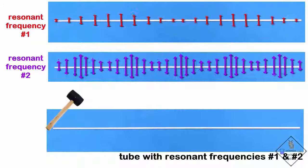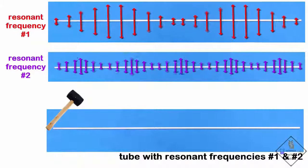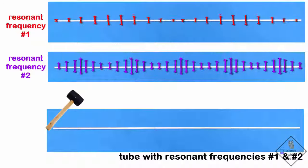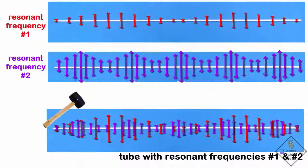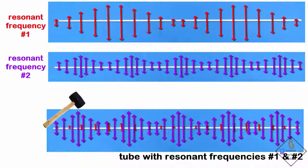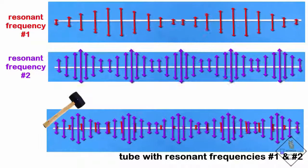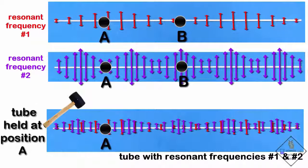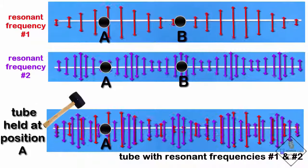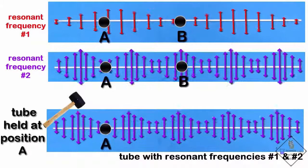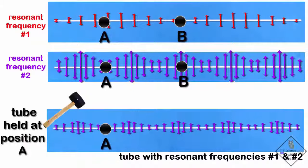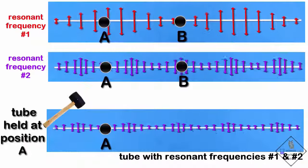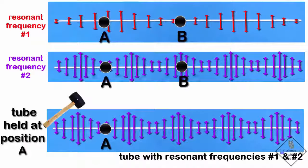Let's pretend this aluminum tube can only have these two resonant frequencies. So when the tube is struck with a mallet, both natural frequencies resonate in the tube. It depends on where the tube is held that determines which resonant frequency survives. If the tube is held at position A, resonant frequency one dissipates its energy into where the tube is being held, while resonant frequency number two continues oscillating because position A is a node for resonant frequency two.